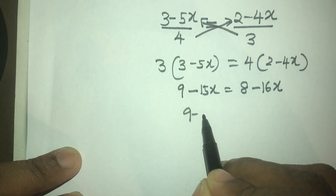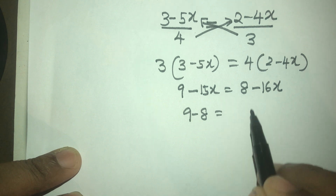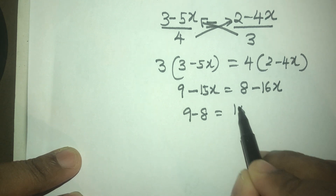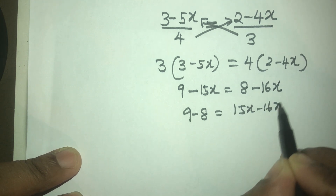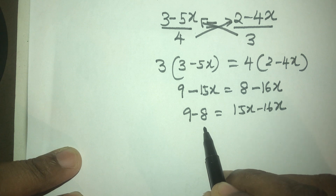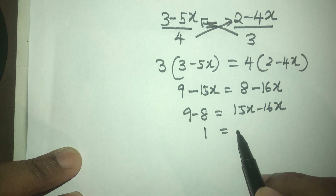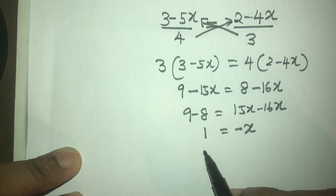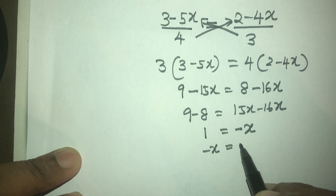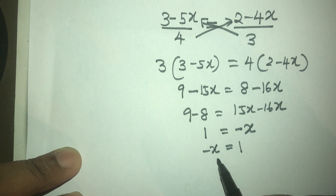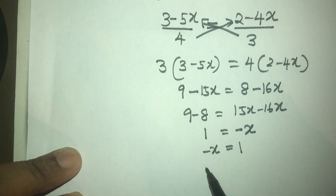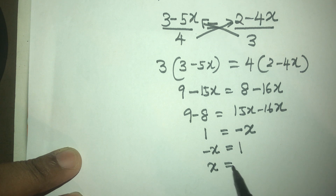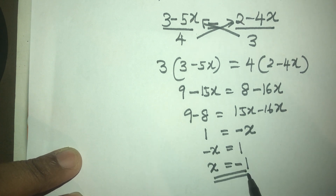So 9 minus 8, and 15x minus 16x becomes 1 on this side, and becomes minus x. So minus x equals 1. When we multiply both sides by minus 1, this becomes x equals minus 1. So the answer is minus 1.